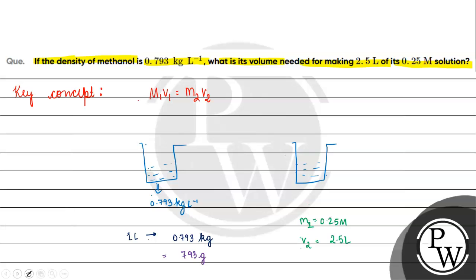M1V1 equals M2V2. If we solve this, M1 is 793 by 32 mole per liter into volume equals 0.25 molar into 2.5 liters.